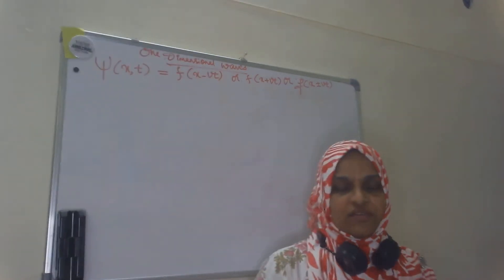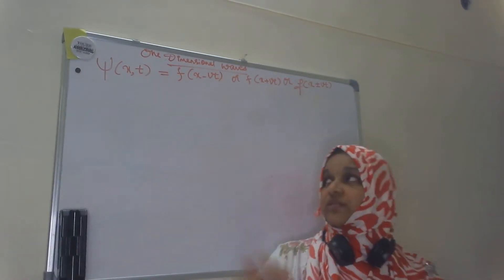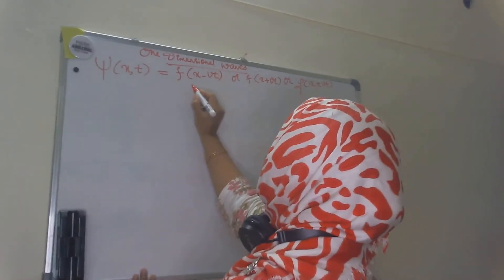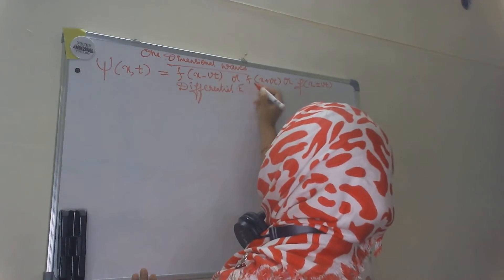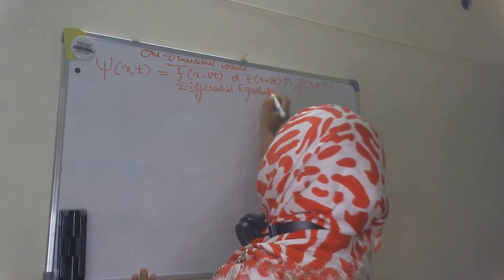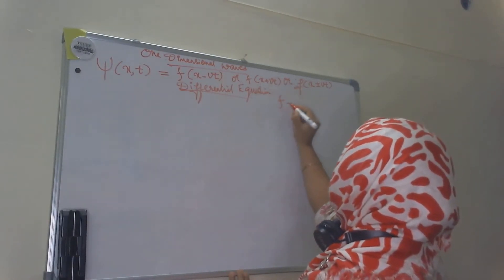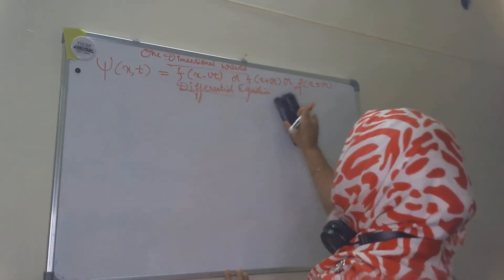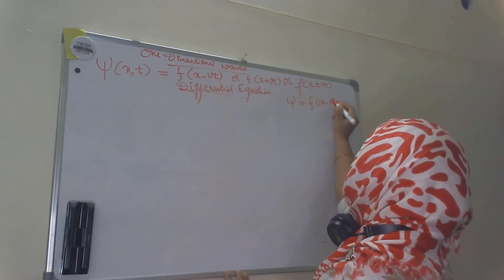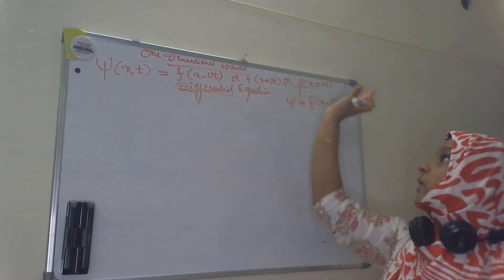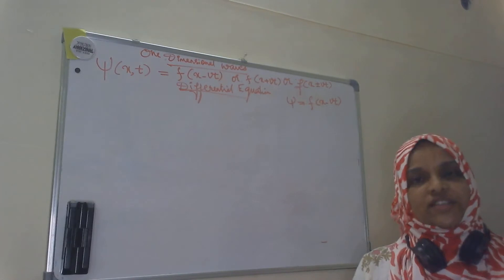This also represents a general wave travelling along the positive or negative x direction. Now we are going to derive a one-dimensional wave equation for such a wave. We need a differential equation to represent this wave. Consider the wave function psi equal to f(x − vt), where we are considering a wave travelling along the positive x axis, represented as psi(x, t) = f(x − vt).